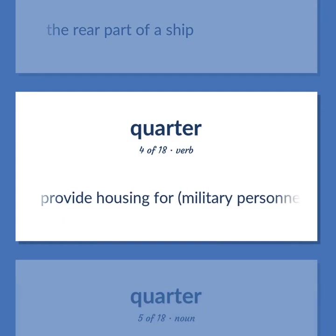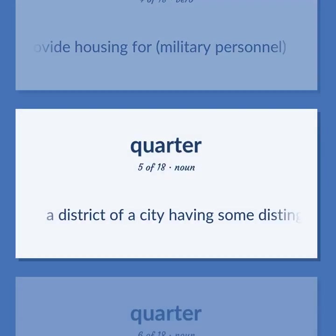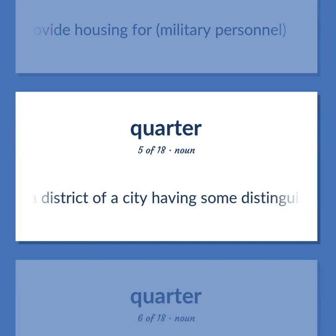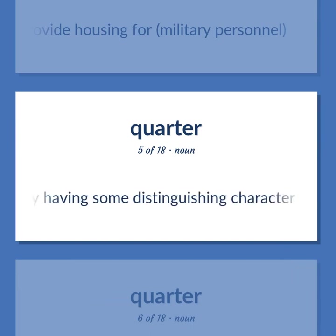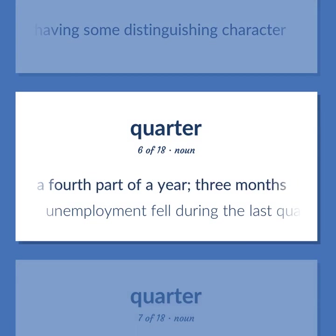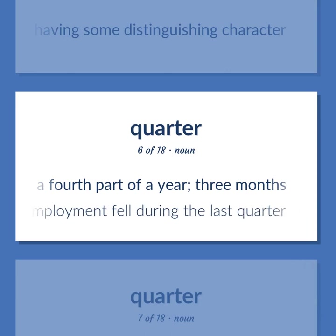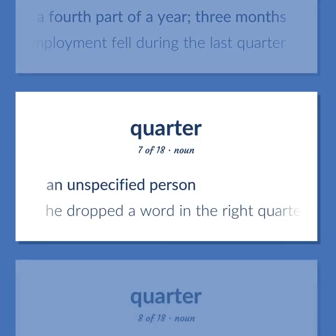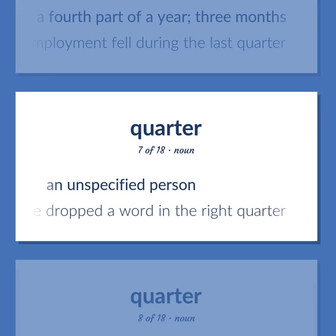Provide housing for military personnel. A district of a city having some distinguishing character. A fourth part of a year, three months — unemployment fell during the last quarter. An unspecified person — he dropped a word in the right quarter.